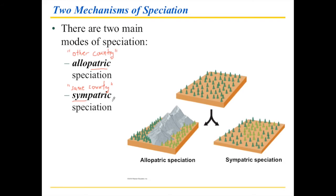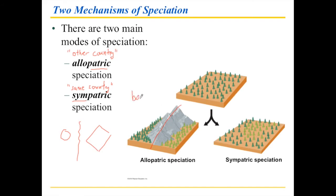Allopatric speciation means that from a time when the entire population is in the same place, you get to a new time where the population is in two places — perhaps separated by a mountain chain or an island. Different islands, different places on either side of a canyon, a lava flow — whatever it is, there's going to be some geographic barrier. Allopatric speciation requires some kind of barrier.